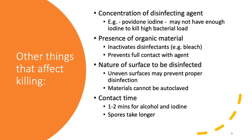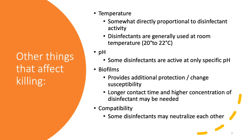You also have to take into consideration the contact time. For example, with iodine and alcohol, you need at least 1 to 2 minutes to kill vegetative bacteria. However, spores take a longer period of exposure. Another factor is temperature, which is somewhat directly proportional to disinfectant activity. Disinfectants are generally used at room temperature, which is 20 to 22 degrees Celsius. So disinfecting a tabletop would require a shorter contact time than disinfecting a refrigerator, for example.